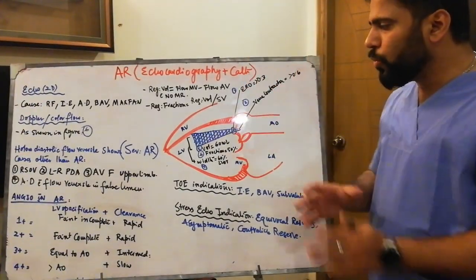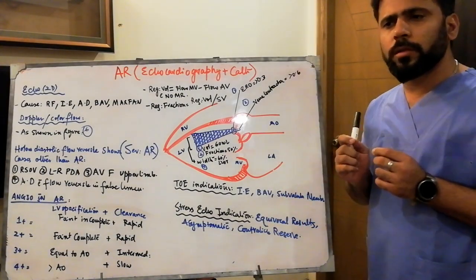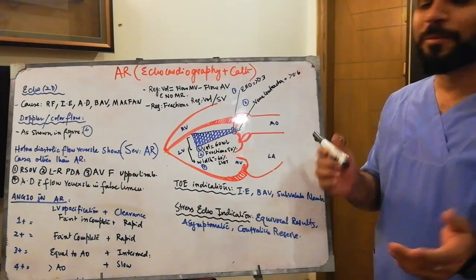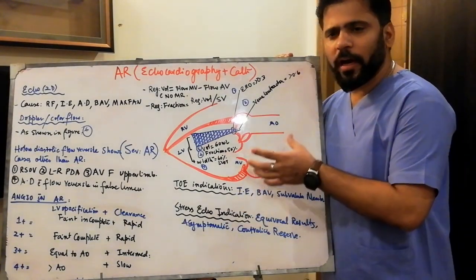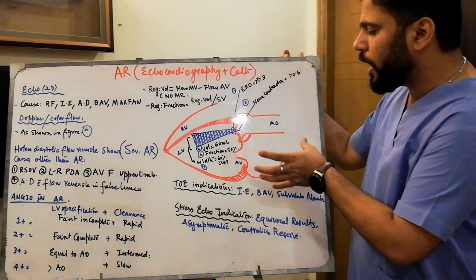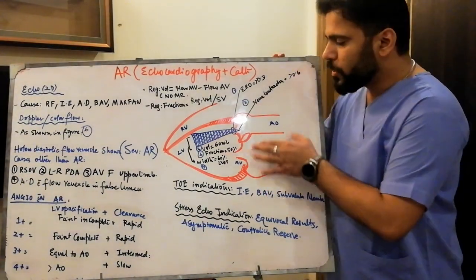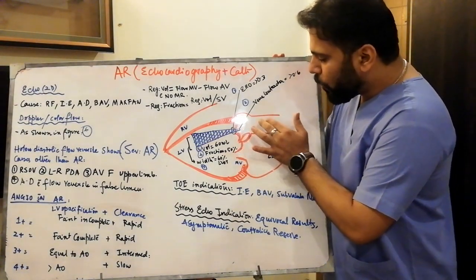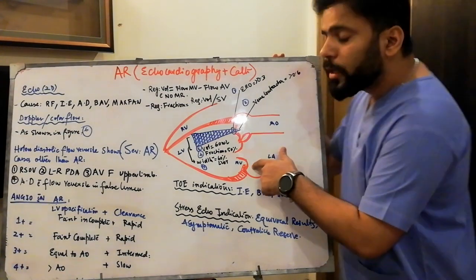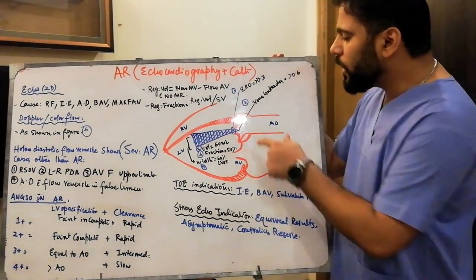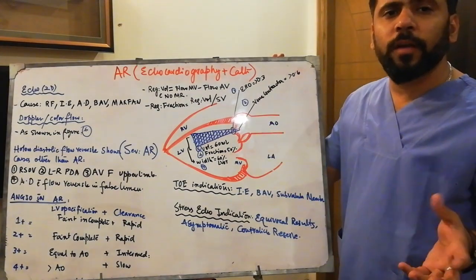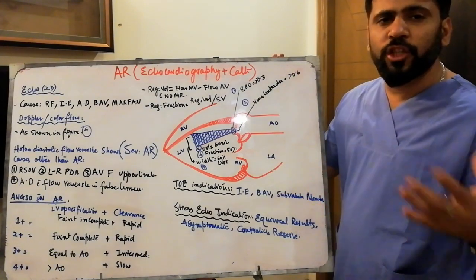Moving towards echocardiographic findings — the screening view of echocardiography is most of the time the parasternal long axis view. I have drawn a picture of the parasternal long axis view showing a jet coming from the aorta to the LV in diastole. Because the mitral valve is open, the heart is in diastole, and ideally there should not be a jet coming from aorta to LV. If it is coming, it means your patient has significant AR. You then put color on it and appreciate the AR jet.